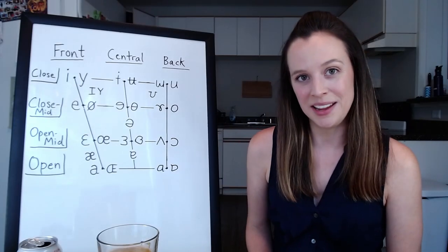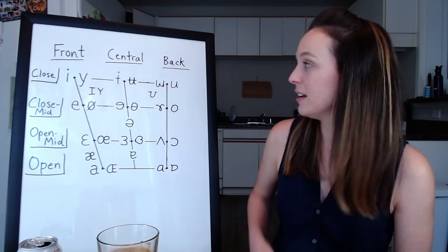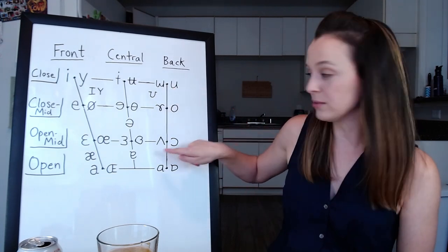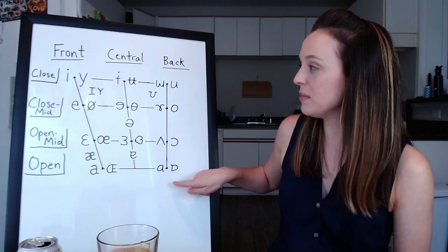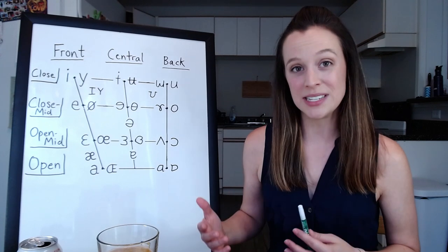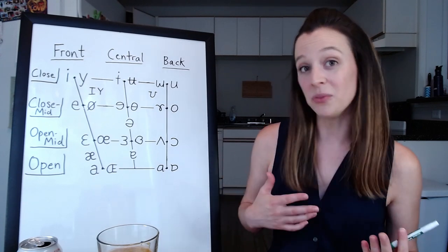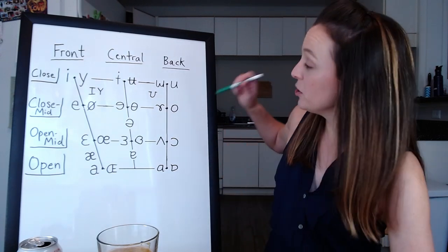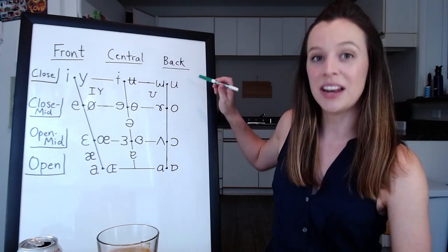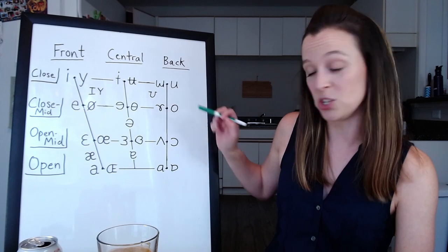One thing you might be noticing about the vowel quadrilateral is that in some positions there are two sounds, right? And so what that means is in every position you can make a vowel sound that's rounded, and you can make one that's unrounded. So all of the rounded ones are going to be on your right-hand side, and all of the unrounded ones are going to be on your left when you're looking at the chart.